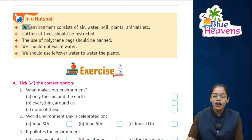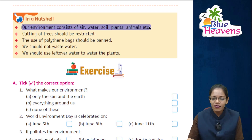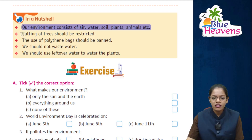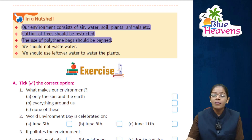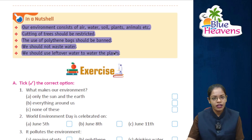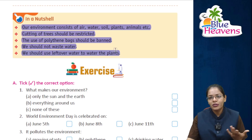Now in a nutshell: Our environment consists of air, water, soil, plants, animals, and other natural as well as man-made artificial things. Cutting of trees should be restricted. The use of polythene bags should be banned as they degrade our environment the most. We should not waste water, and we should use leftover water to water the plants.